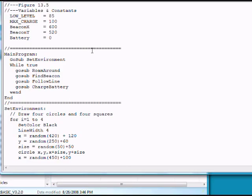This is the program to control the environment we just saw. The main program here sets up the environment, and then while true, this is an endless loop, it roams around, then it goes and finds the beacon, follows the line, charges the battery, and continues to do that over and over. Let's run the program.